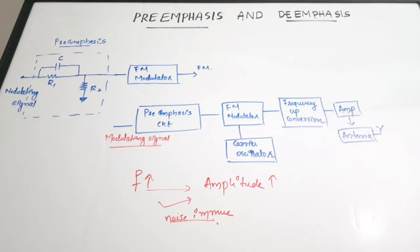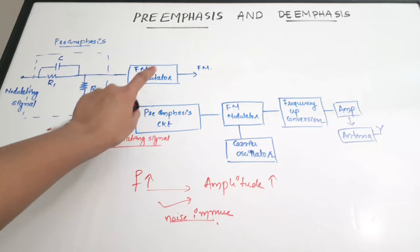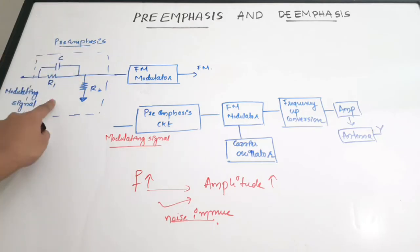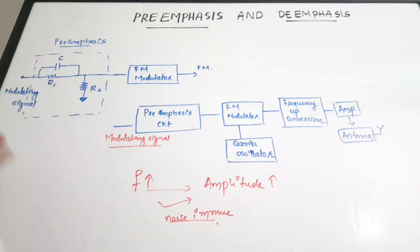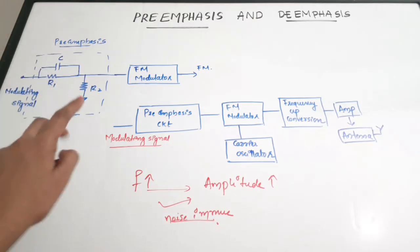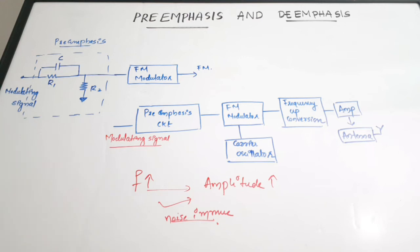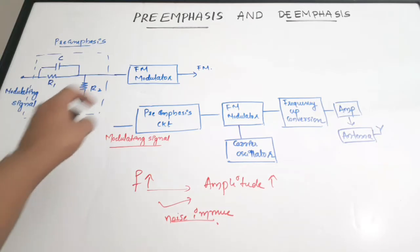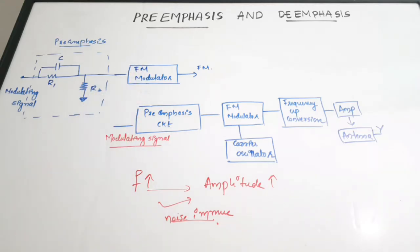This boosting of higher modulating frequencies is called pre-emphasis, and it is achieved with the help of a pre-emphasis circuit shown in the figure. Before the FM modulator, we boost our higher frequencies with the pre-emphasis circuit. This circuit is an RC circuit that acts as an RC high-pass filter, passing on higher frequencies, and then the signal goes to the FM modulator to produce the FM output.